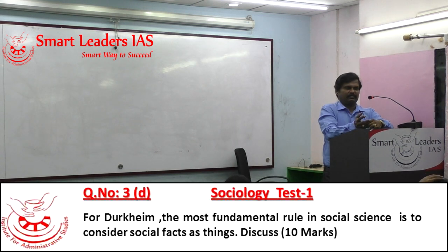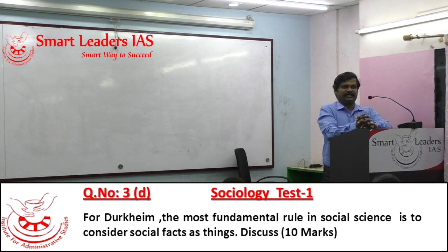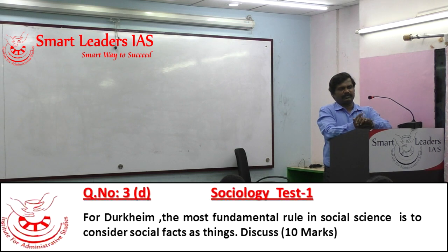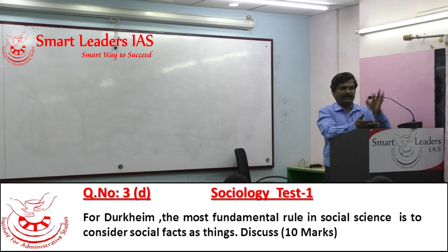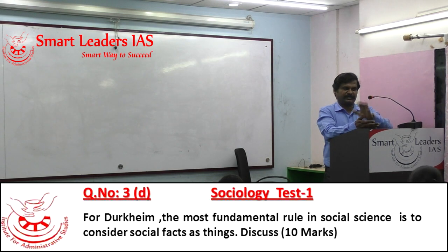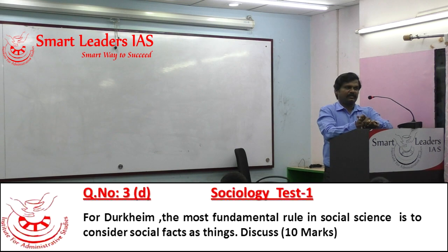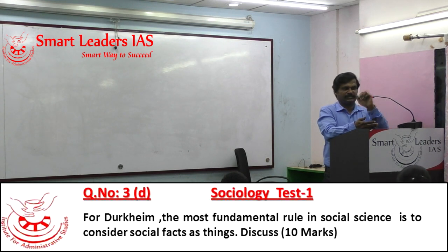Durkheim was ambitious to make sociology a subject having the status of natural science. Natural science was glorified for the possibility of prediction, the precision present in natural science, and the objective study possible in natural science — all of which was tempting Emile Durkheim to take up these approaches of science and inject them into social science.